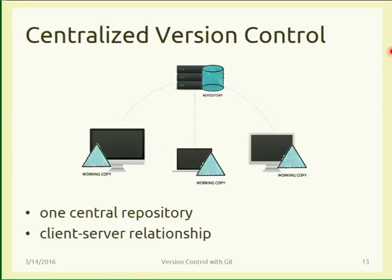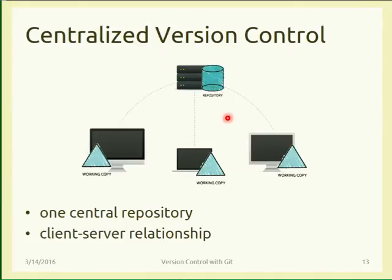In a centralized version control system, this is the typical scenario: each developer has a working copy, and there is one and only one central server, one central repository. Everyone commits to and updates from that central repository. This is easy, but the problem is that in a centralized system only one repository can exist. To overcome this, maybe an industry needs a central repository for development and another for a public release — in this way, that's not easily possible.